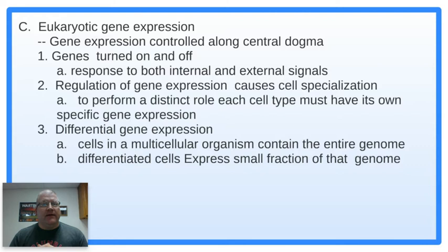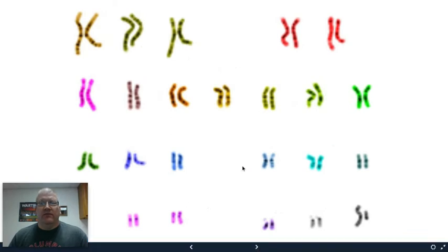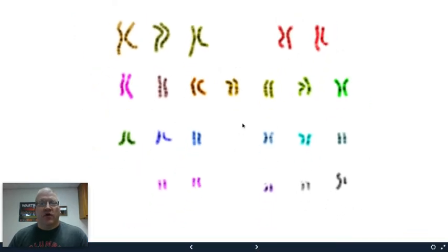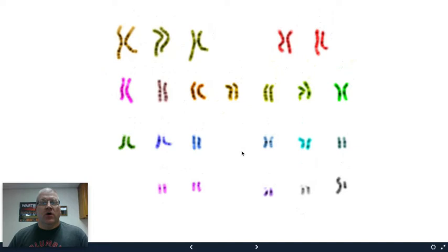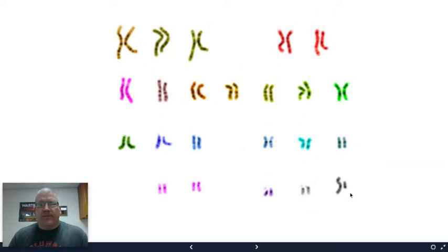We're going to take a look at controlling the central dogma from the very start, the genome itself. This is part of gene expression and control that just fascinates me. So here we have the human genome. You've got your 23 pairs of chromosomes, and every cell in your body has all of these.